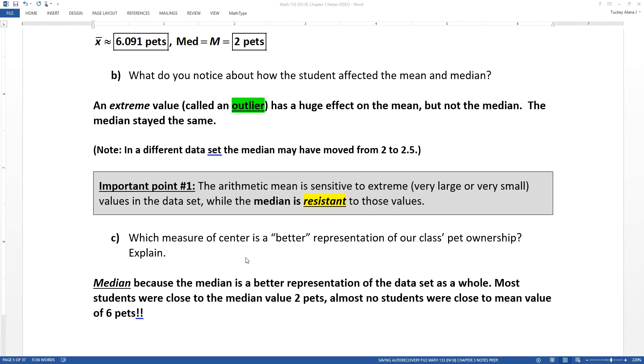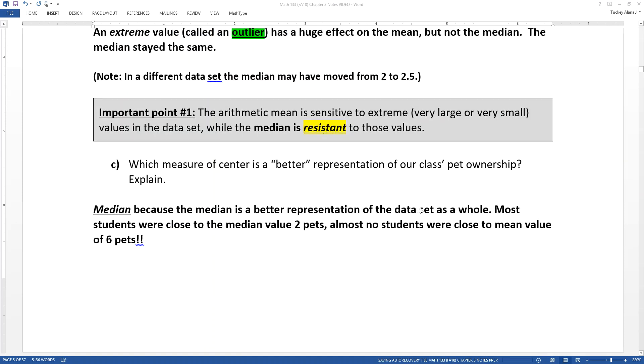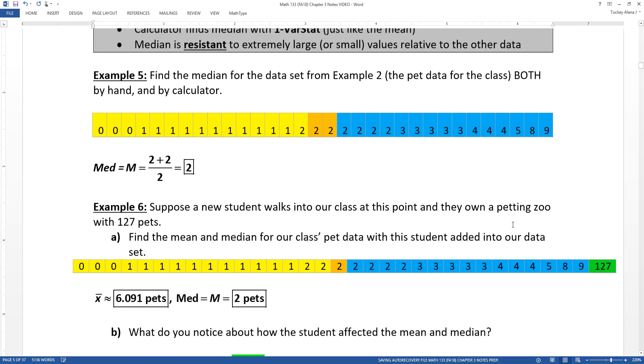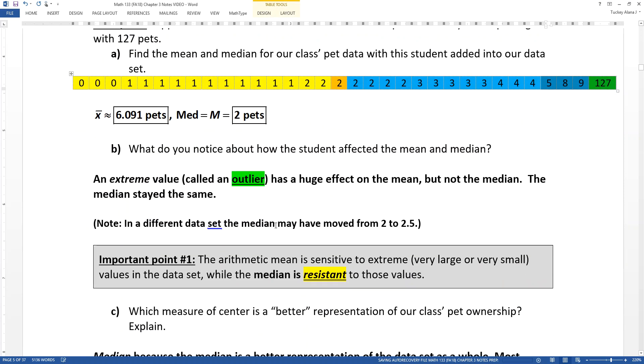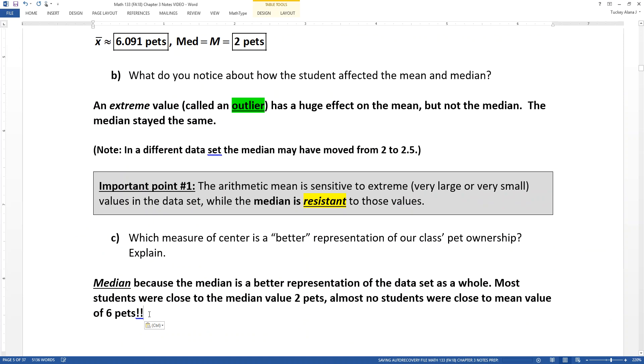So for example, in our data set, most students were close to two pets. Almost nobody had pets of six. Actually, nobody did, but there were a couple students that were up that high at the five, eight, and nine level. But six is a tremendously unuseful value for examining that data set because there were so few students that high. That did not measure center at all for us.